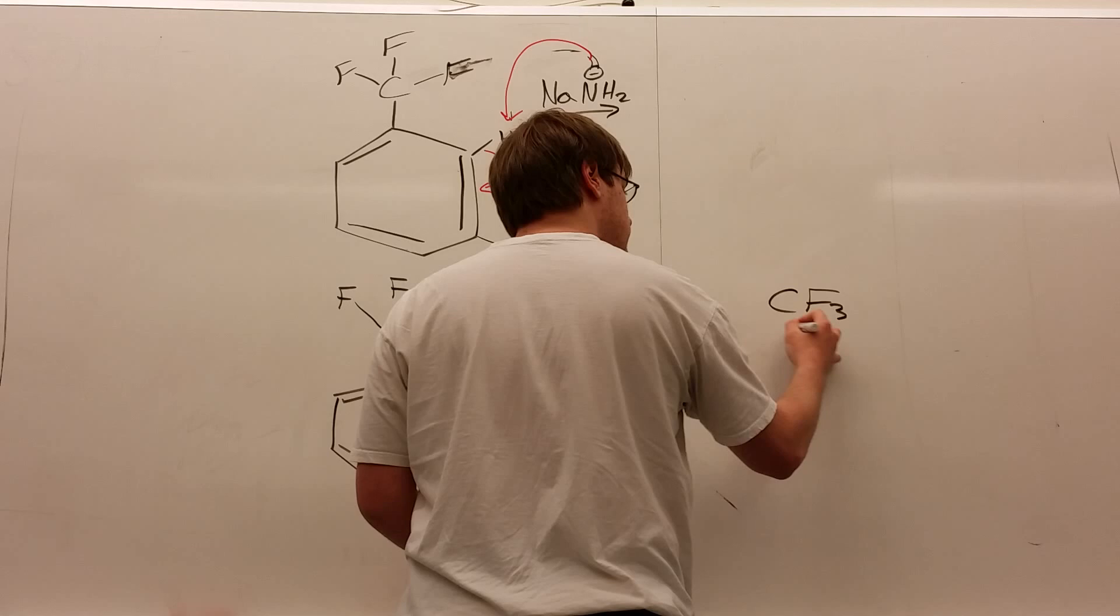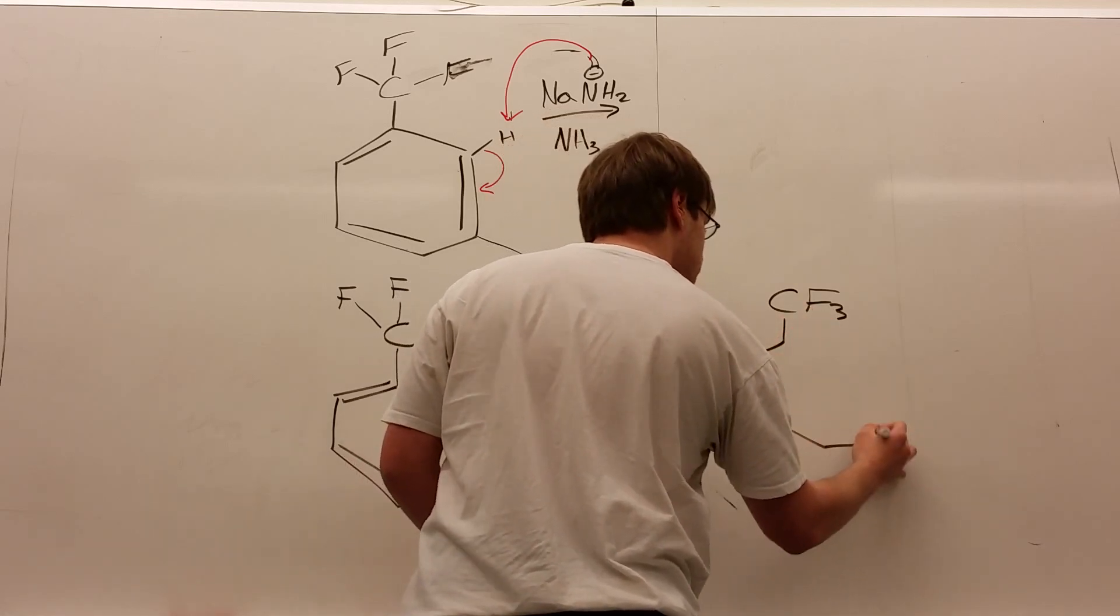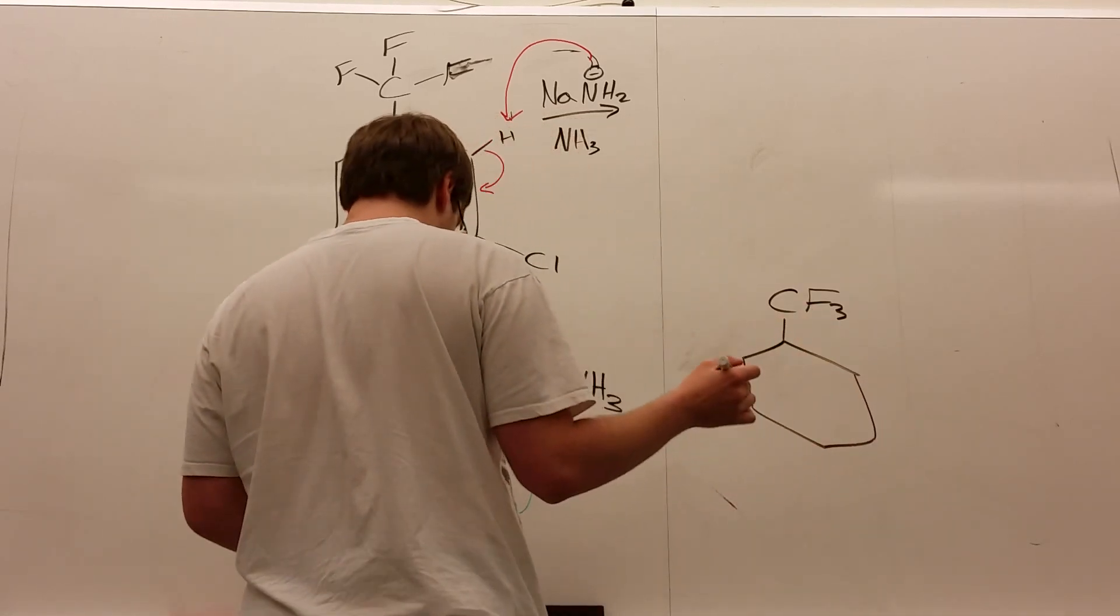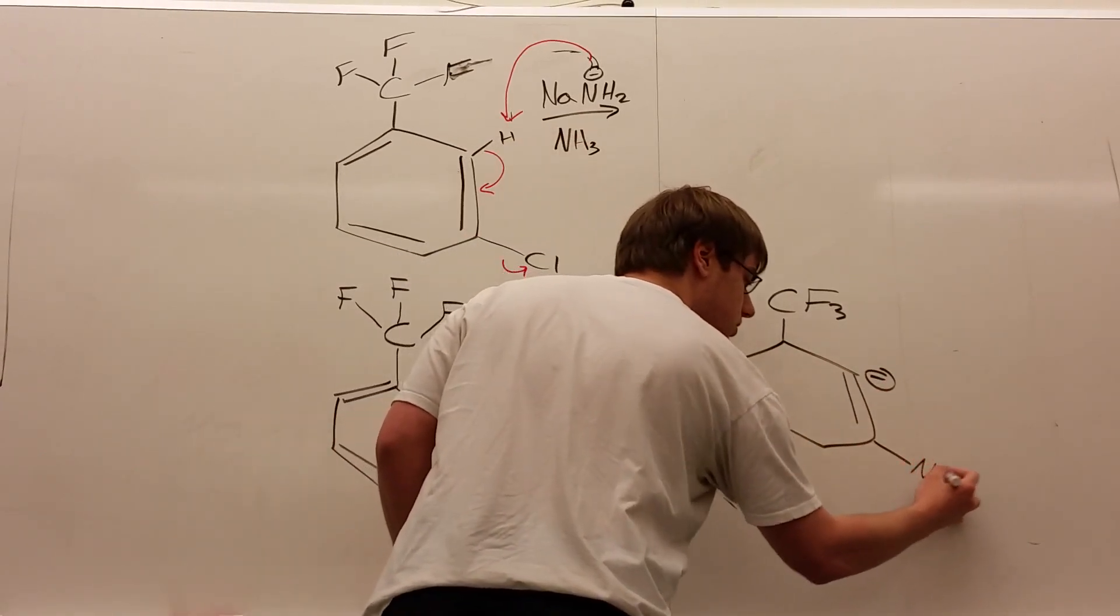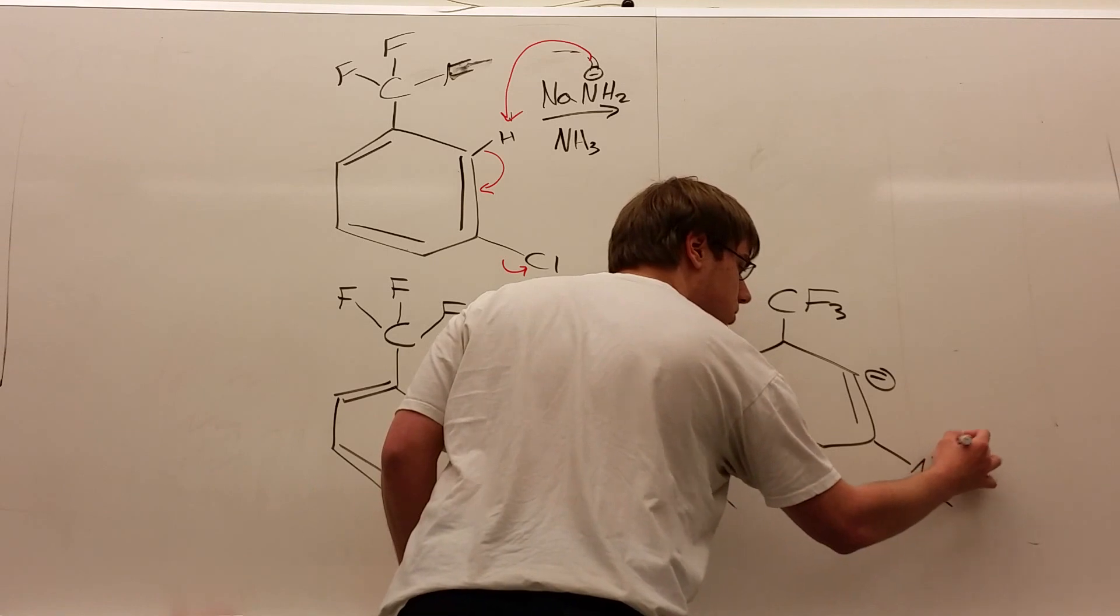And now we have this intermediate, CF3 on a benzene ring, and now we have a negative charge here on a double bond, and the NH2H+.